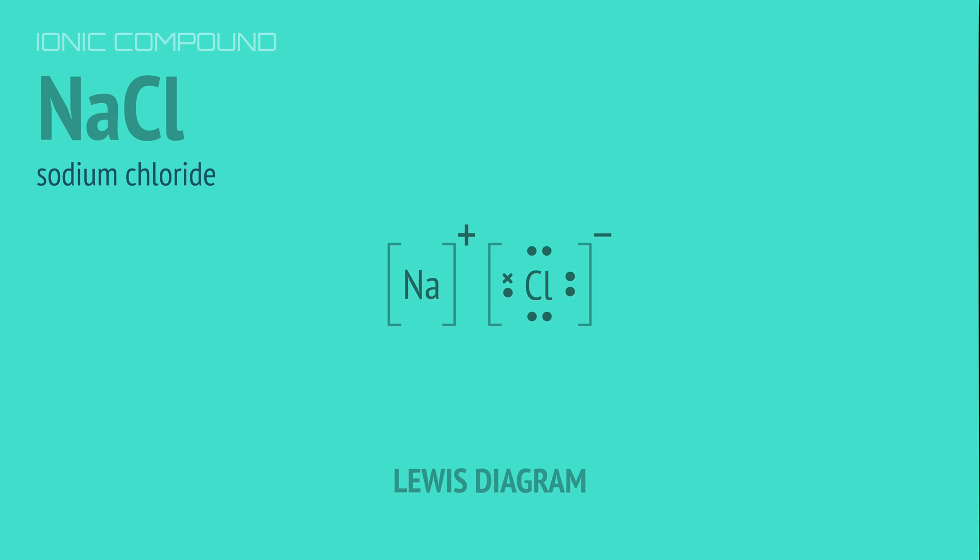This Lewis diagram shows how the valence electrons are involved in the bond, with crosses and dots to represent the electrons from each atom.